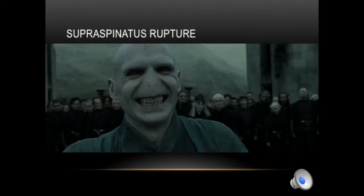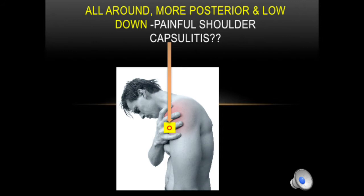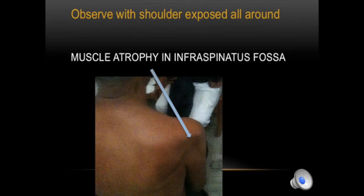If the pain is more diffuse, all around the shoulder, and also inferiorly, this is typically coming from a capsulitis. When you inspect the shoulder from the front and behind, you sometimes see muscle atrophy in the infraspinatus fossa. This denotes a long-standing infraspinatus rupture or massive cuff tear.